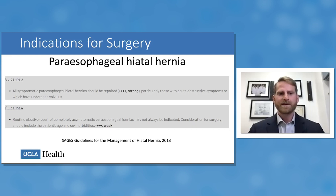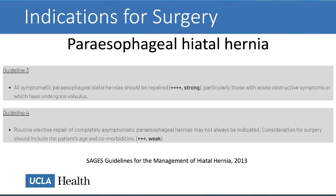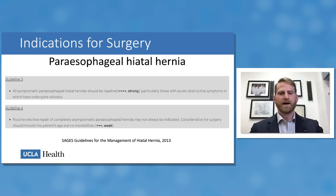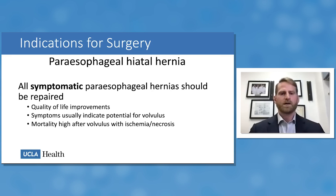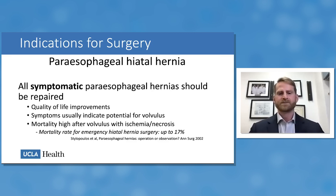Paraesophageal hernias have different repair indications: essentially any symptomatic paraesophageal hernia should be repaired, especially those with obstructive symptoms indicating intermittent chronic volvulus. For completely asymptomatic paraesophageal hernias, the recommendation is nuanced — traditionally all were repaired, but now the surgeon should consider patient age and comorbidities. Any symptomatic repair results in quality-of-life improvements and prevents emergency surgery, whose mortality is quoted in some papers as up to 17%.